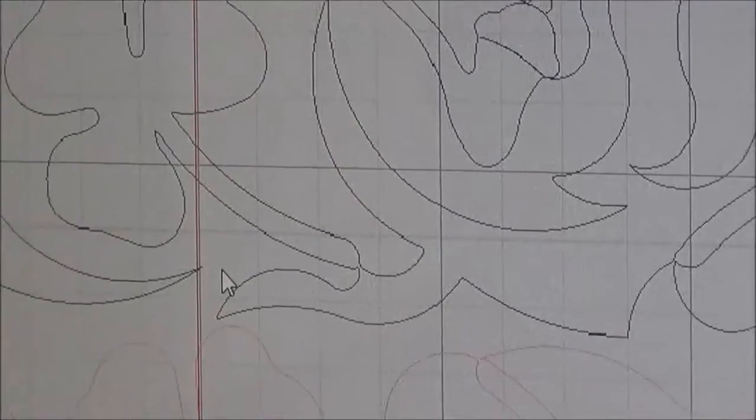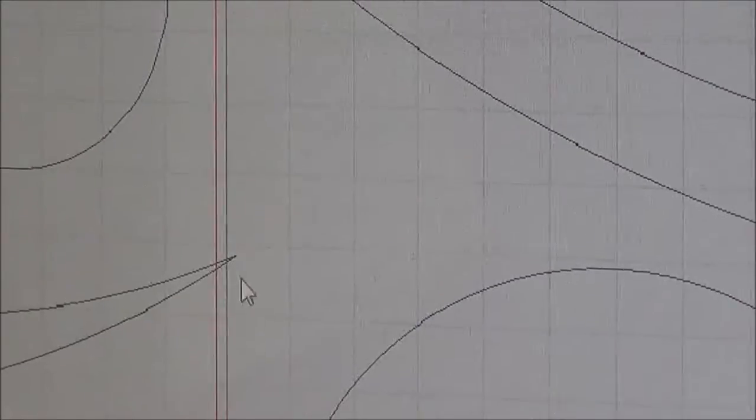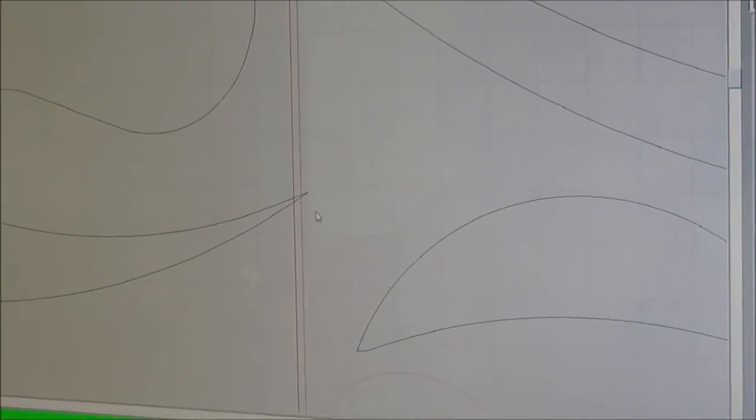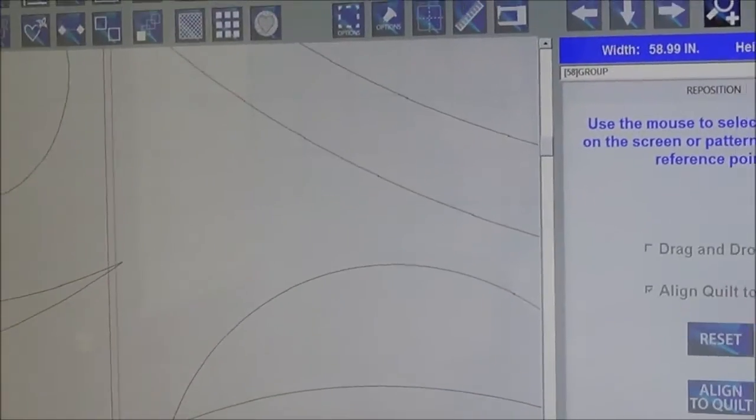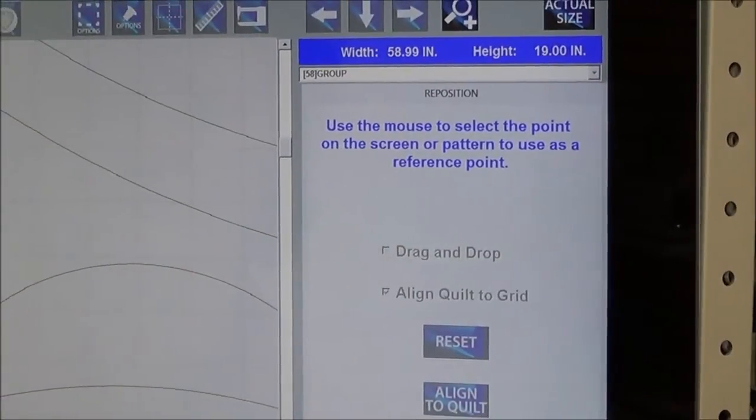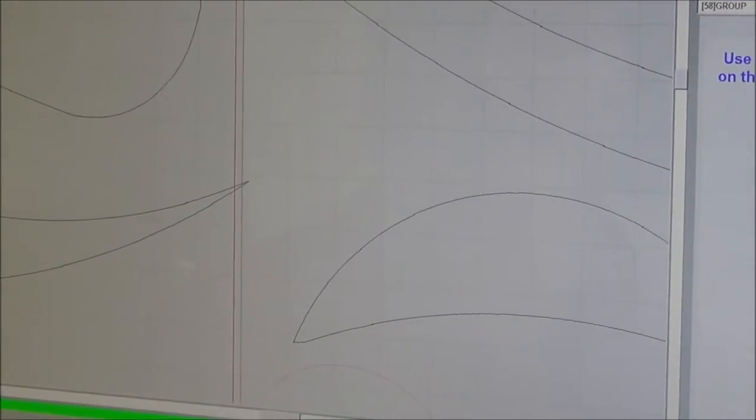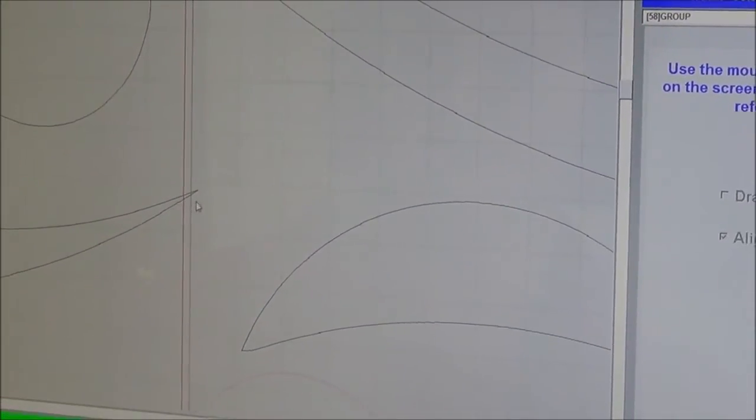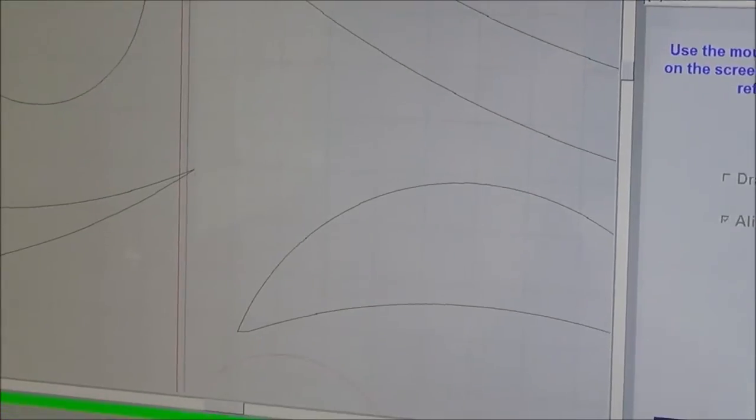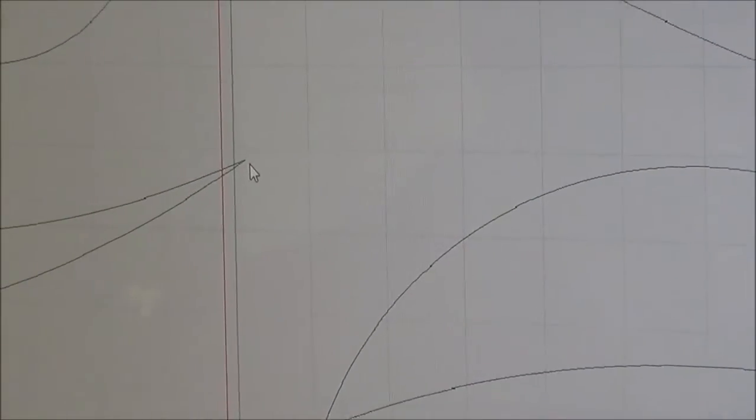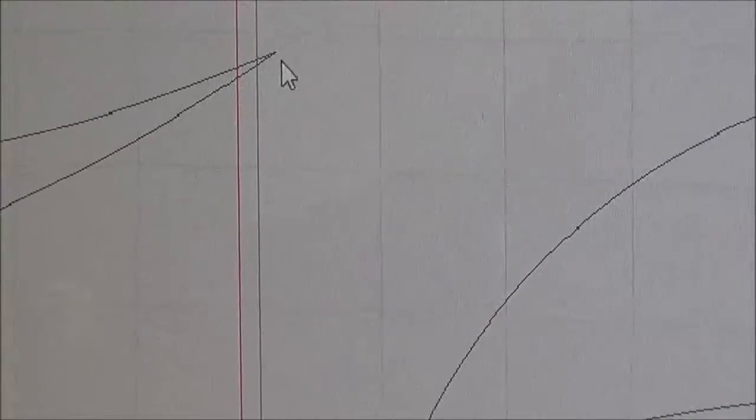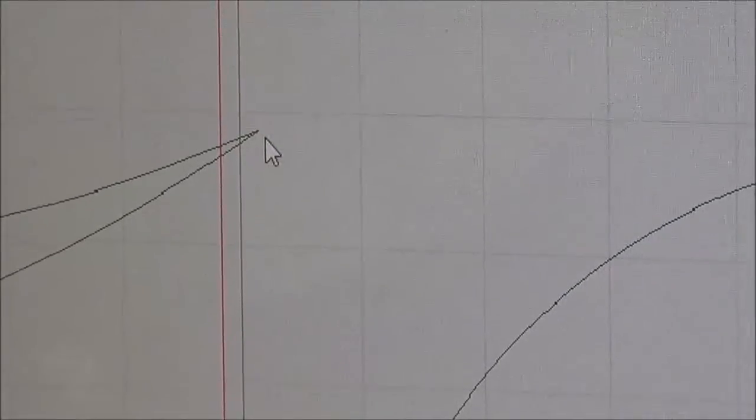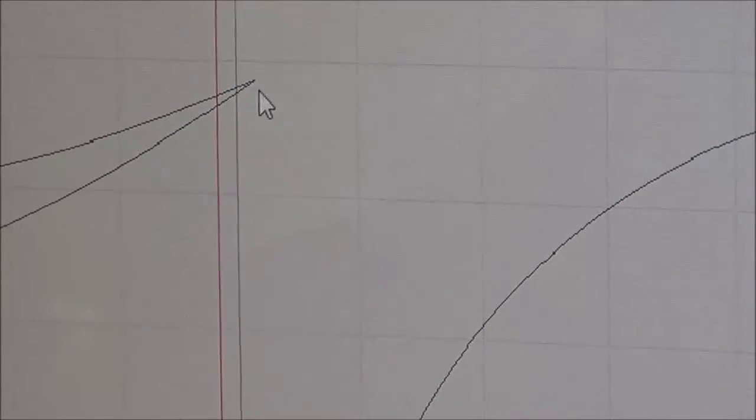When I click on this point it's going to bring that point to the center of the screen and magnify it. Each time I click in I'm getting closer and closer to that point. Now what I have to do is use the mouse to select the point on the screen or pattern to use as a reference point. So here's that point and to use the mouse I have to turn the mouse selector back on.